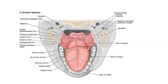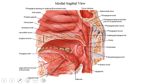The lateral wall of Waldeyer's ring is formed by the palatine tonsil, which makes up the lateral wall of the oropharynx. This is the lateral medial sagittal view showing the lymphatic masses. The palatine tonsil is in the tonsillar fossa; above the palate along the lateral wall of the nasopharynx lies the tubal tonsil; and the roof of the nasopharynx beneath the occiput contains the pharyngeal tonsil, also called the nasopharyngeal tonsil.